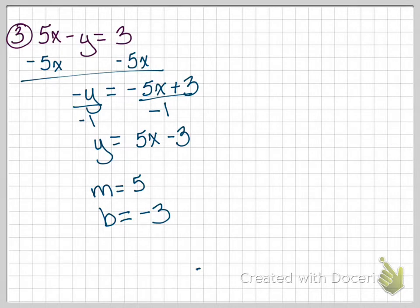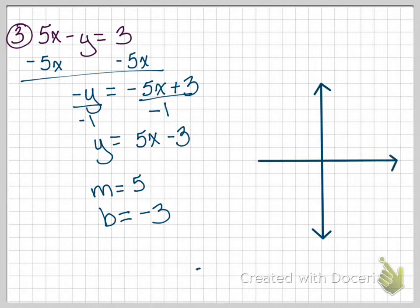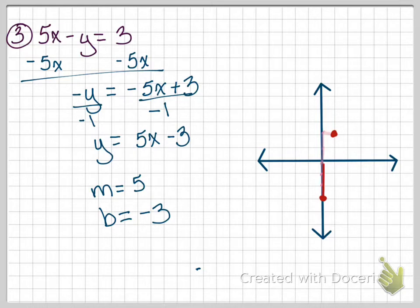Starting over: the slope is 5 over 1. Here's the y-axis and x-axis. Starting at negative 3, going up 5 and over 1, we get our corrected graph. The slope here is 5 over 1.